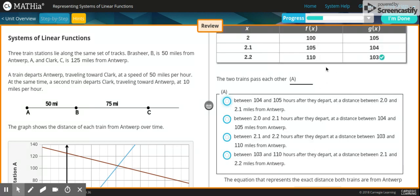So if you can see that this one changes by 5 and it adds 5 and this one subtracts 1 each time. So the two trains pass each other between 104 and 105 hours after they depart at a distance between 2.0 and 2.1 miles from Antwerp. Or between 2.0 and 2.1 hours after they depart at a distance between 104 and 105 miles from Antwerp.